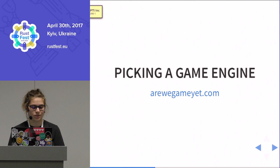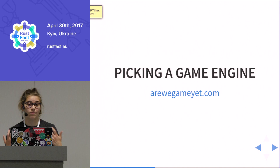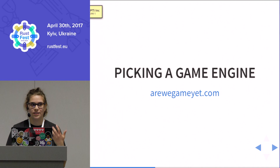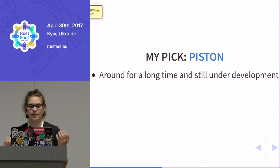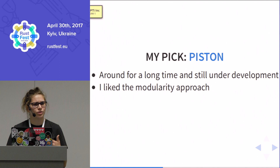Picking an engine: there's a very cool site called arewegameyet.com, which lists game-related resources in the Rust ecosystem — crates you might want to use, lists of games that are already out there. So I went to the list of game engines and picked the first one: Piston. For the short lifetime of Rust itself, Piston has been around quite a long time, it's still very actively maintained and developed, which I thought was a good indicator.